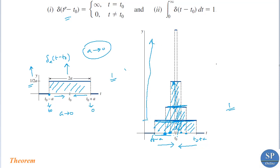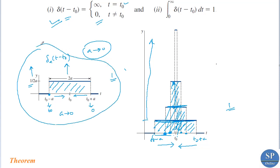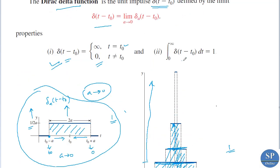So the Dirac delta function δ(t − t₀) has the property that it equals infinity for t = t₀ and 0 for t ≠ t₀. Also, the integral from 0 to infinity of δ(t − t₀) dt equals 1, meaning it preserves unit area. These two properties of the Dirac delta function are obtained directly from the definition as the limiting case of the unit impulse function.